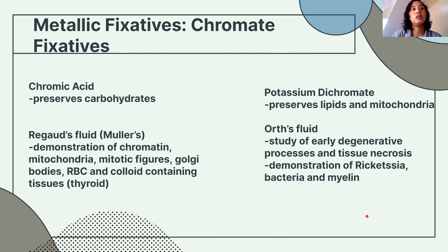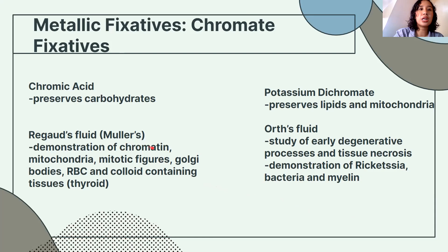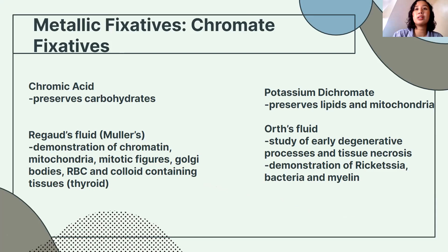Chromate fixatives: chromic acid is used for carbohydrates, and Regaud or Muller's fixative is used for demonstration of chromatin, mitochondria, mitotic figures, Golgi bodies, RBCs, and colloid-containing tissues such as the thyroid. Under chromate fixatives, there is also potassium dichromate, which preserves lipids and mitochondria.